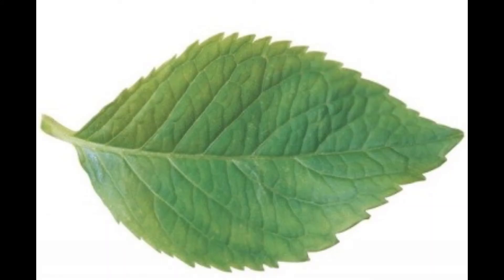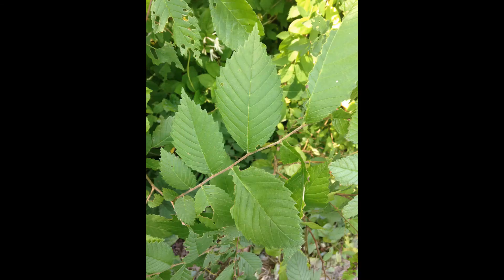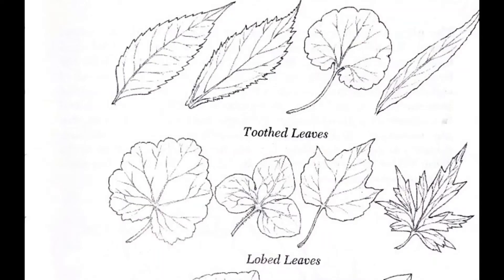The next type of leaf is a toothed leaf, which means that their margins have regular, shallow indentations along the edge. Although the leaves shown here have pointed teeth, toothed leaves can have wavy or scalloped edges as well.